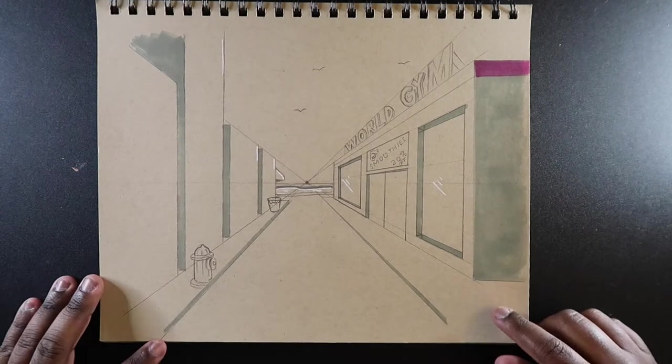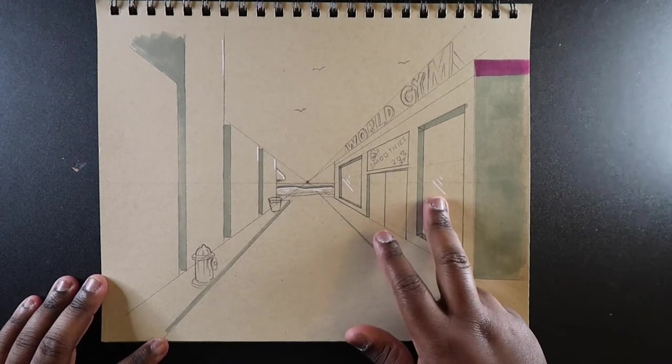So unlike normal sketchbooks where it's just white, you can also apply a white colored pencil to this paper and it'll actually show up, which is pretty neat in my opinion.